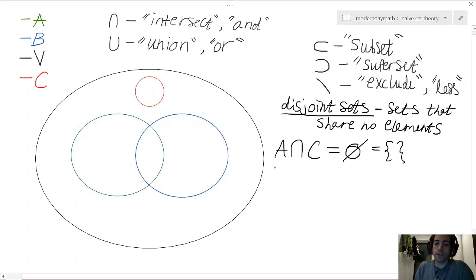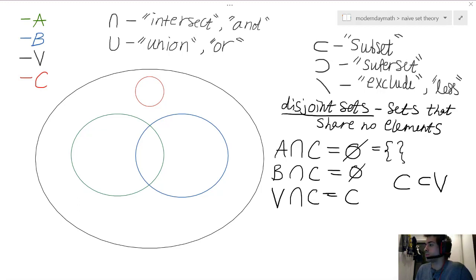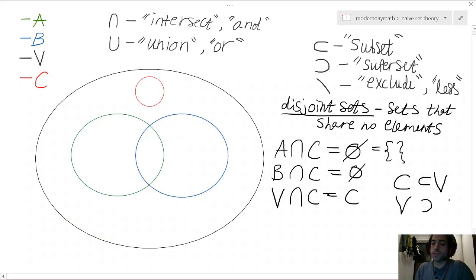Now, if we wanted to talk about B intersected with C, we would get the same result. We would get the empty set. But talking about V intersected with C, we just get C. Now, using the notation for subset, we have that V intersected with C equals C since C is a subset of V. Alright, so we can also say that V is a superset of C. Alright, but you'll more commonly see the notation of a set being a subset of another.